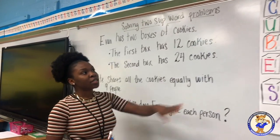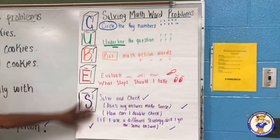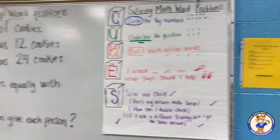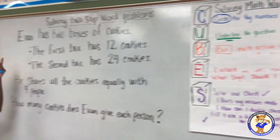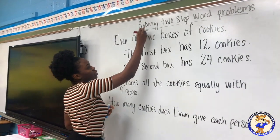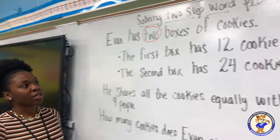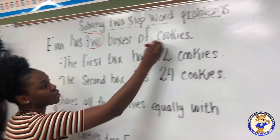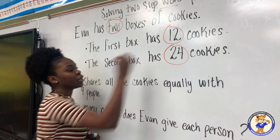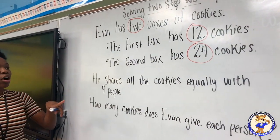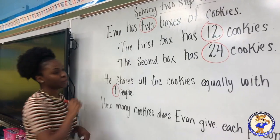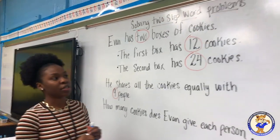First we're going to look at how to solve word problems using our CUBES method. The first thing that we're going to do is circle any key numbers. Here in our problem, we see that Evan has two boxes. The first box has 12 cookies. The second box has 24 cookies. He shares all the cookies equally with nine people. We are done with our first step.